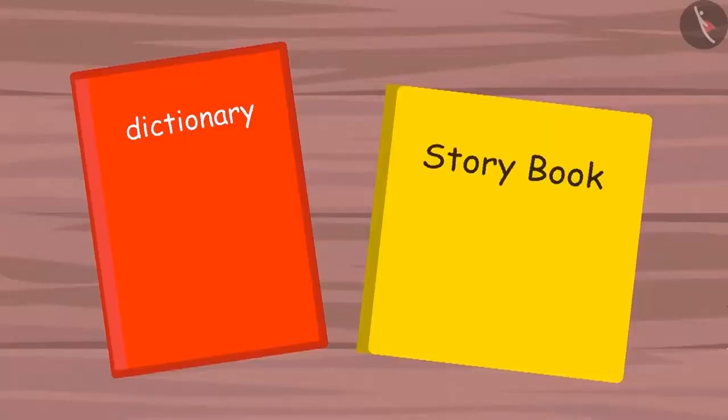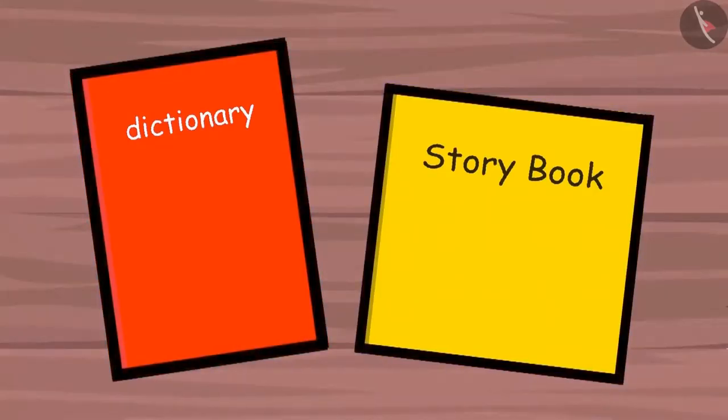Different shapes are measured based on how much space they occupy. Both these books are a quadrilateral. Meaning, they have four sides or edges.